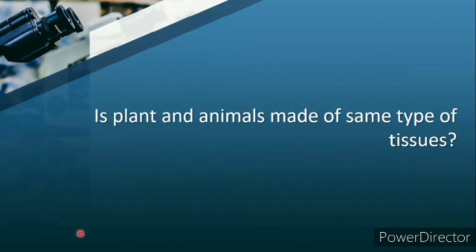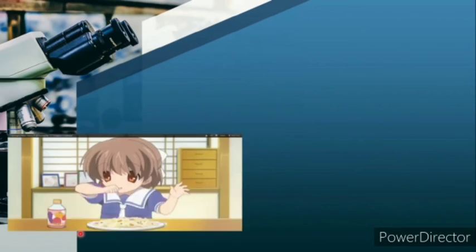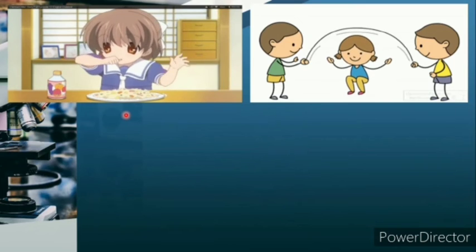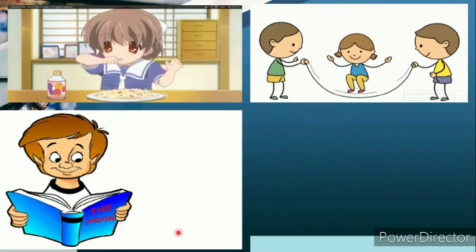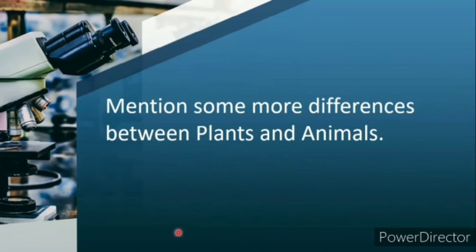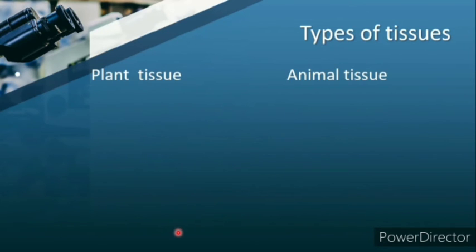So are plants and animals made up of the same type of tissues? The answer is no. Animals and humans can eat, play, walk, and read - but can plants perform these activities? No. There are many differences between plants and animals, and because of that, plant tissues are different from animal tissues.